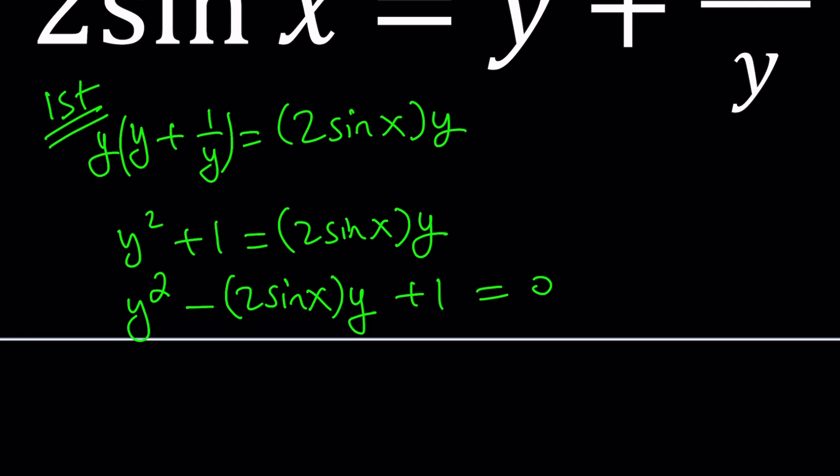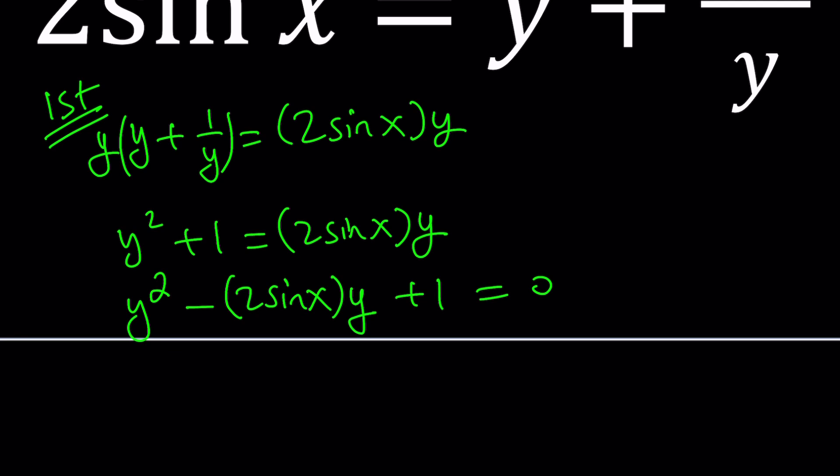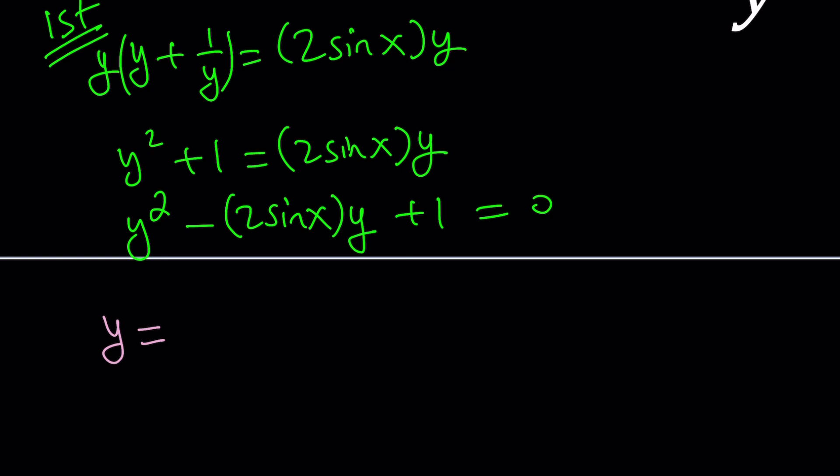So now notice that this is quadratic in Y. And you're like, why? Think about it. And since it's quadratic, we can solve it using the quadratic formula. But guess what? You're in for a surprise. So if we use the quadratic formula, we get negative B, which is 2 sine X, plus minus the square root of B squared. Remember the formula, negative B plus minus the square root of B squared minus 4AC all over 2A.